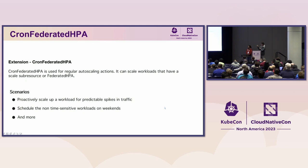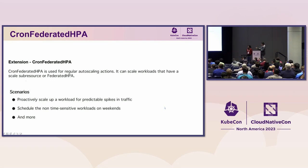With the latest version of Karmada, there is a new API: CronFederated HPA. It is primarily used for scenarios like: if there is a traffic spike every day at 9 AM, you would like to proactively scale up the related servers ahead of time — for example, 30 minutes before — to handle the payloads and ensure availability.